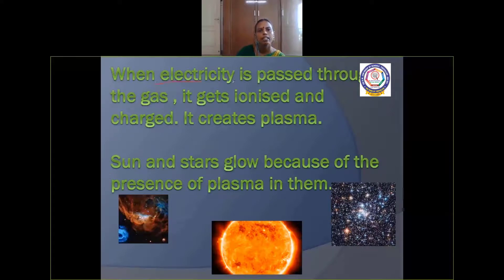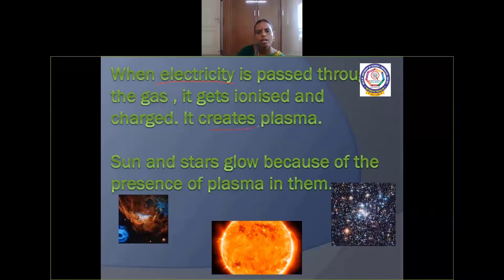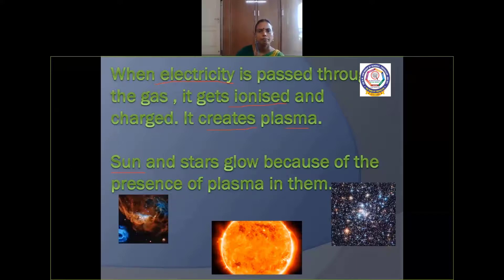When electricity is passed through the gas inside the bulb, it gets ionized — ionized particles are formed, get charged, and create plasma. Sun and stars glow because of the presence of plasma in them.